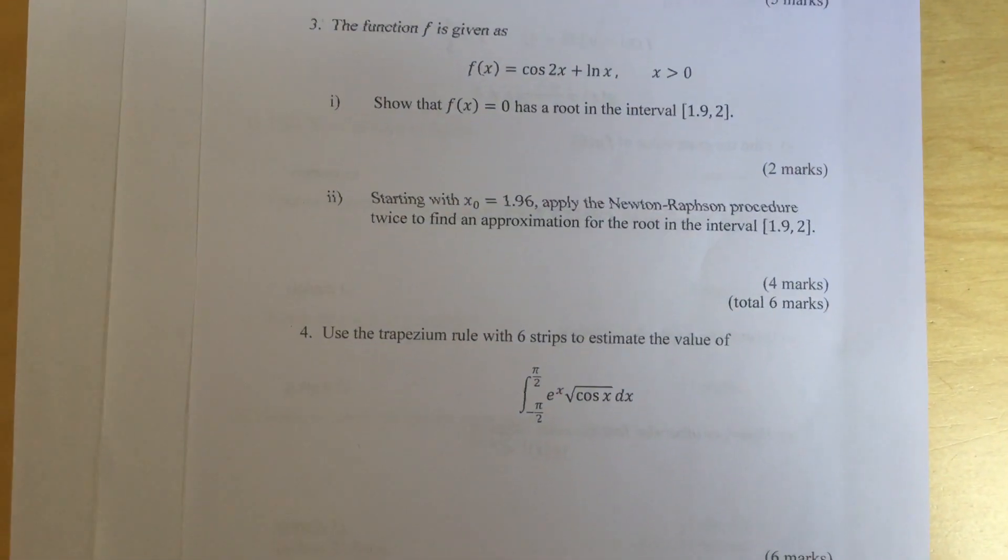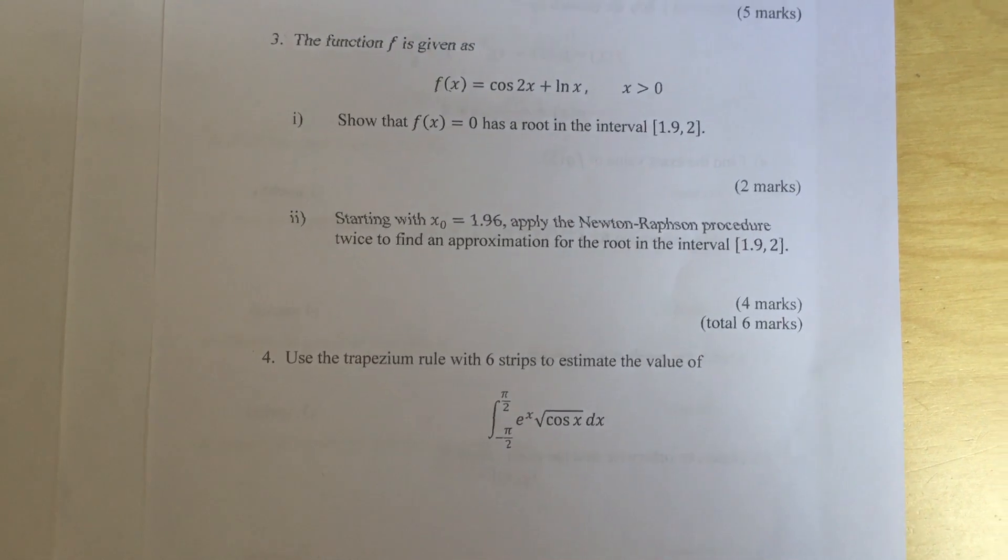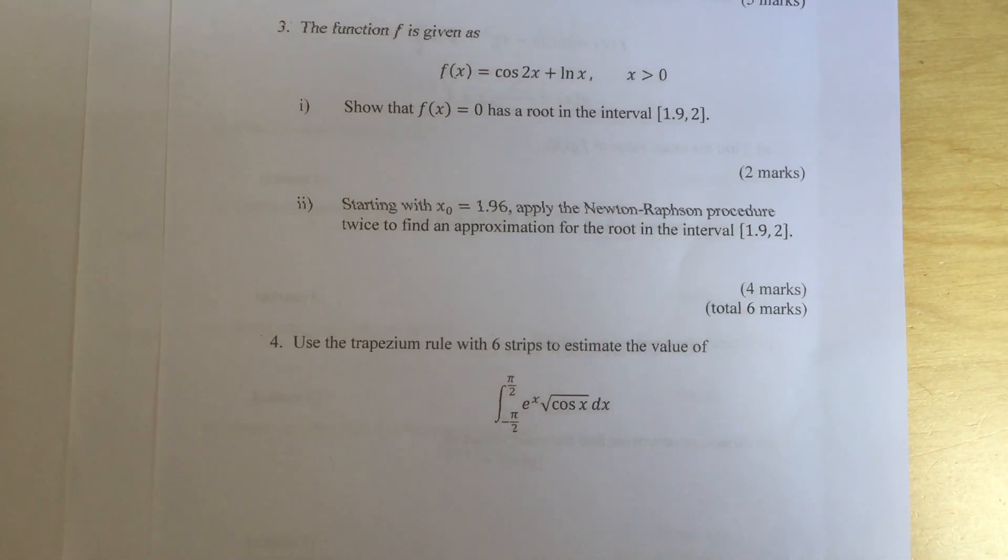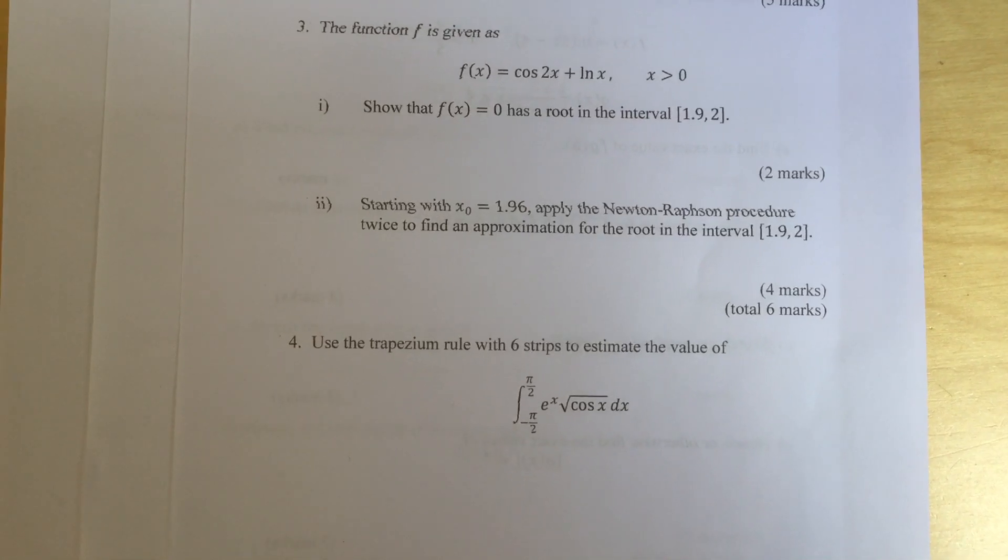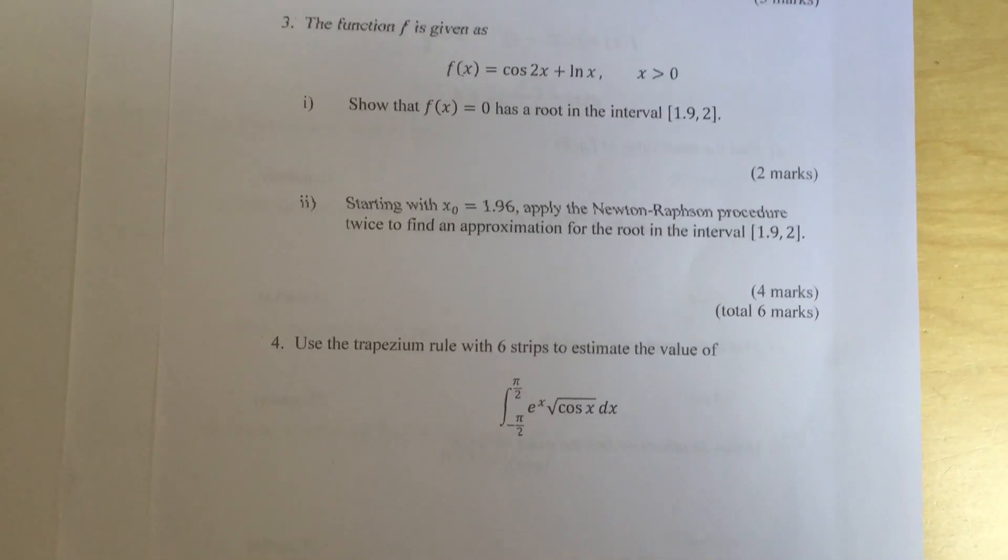Question 4: Use a trapezium rule with six strips to estimate the value of integral from minus pi over 2 to pi over 2 of e to the x square root of cos x dx.